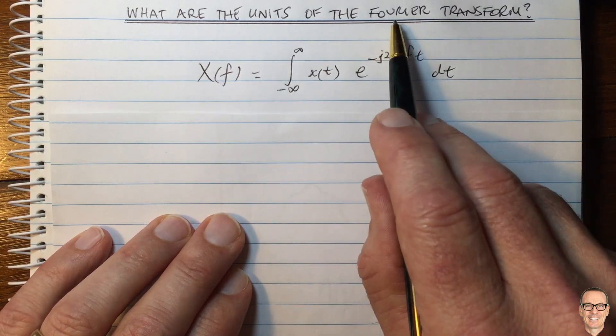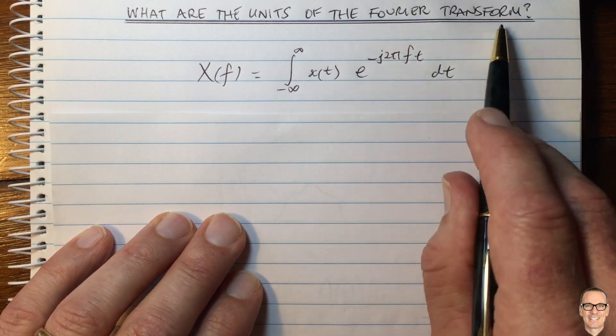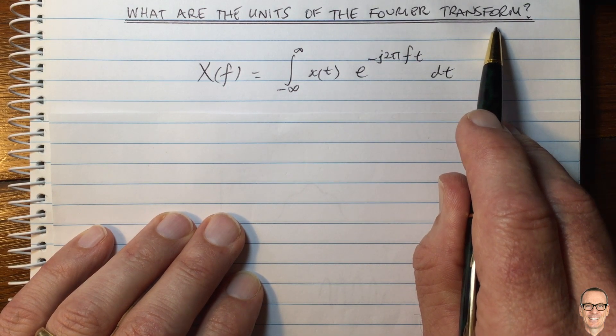What are the units of the Fourier transform? We're going to see that the Fourier transform is actually a density function. So what does that mean?